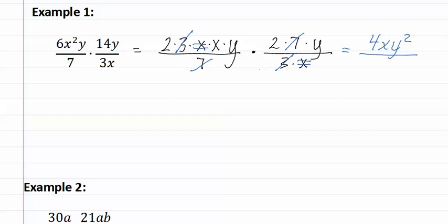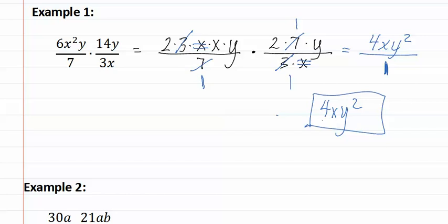Over — remember, if there is nothing there and we have divided it all out, there is still a one there. The reason we got rid of the two sevens was that seven divided by seven was one in both cases. This is also true for the other denominator, which means that we have four x y squared over one. The one is not necessary in our answer, so we write our answer as four x y squared.